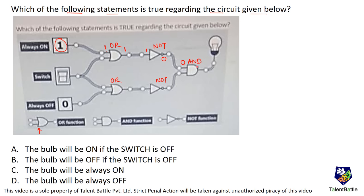Since the NOT gate output is 0, this line is always 0. For the AND gate, even if one input is 0, the output is 0. So the bulb will always remain off. Even if the other input varies through the OR gate, the AND gate always has one input at 0, keeping the output 0. The answer is option D.